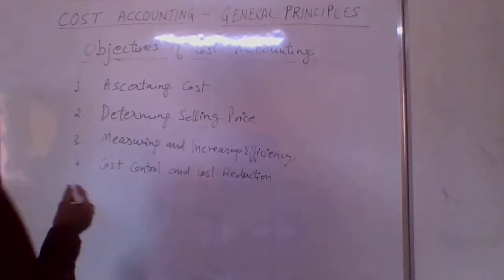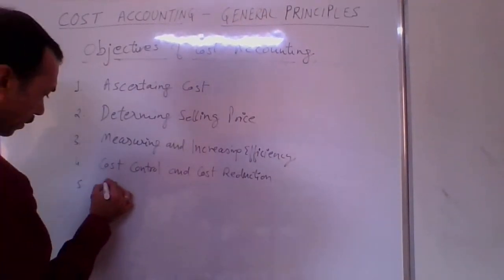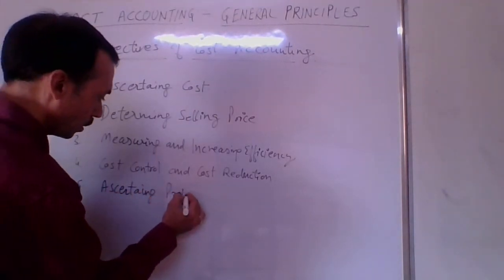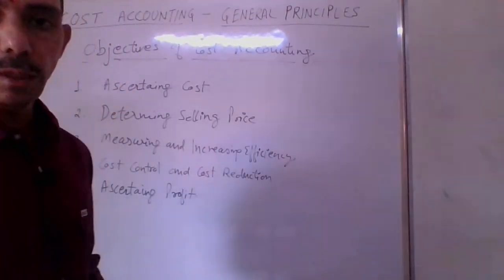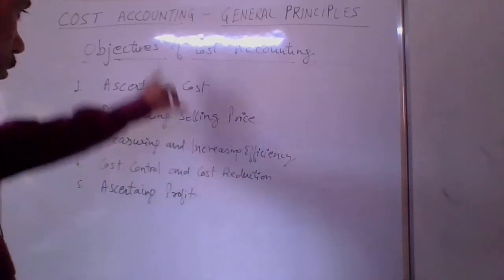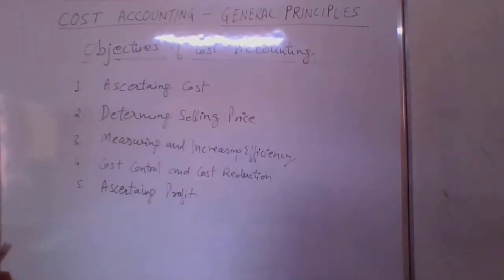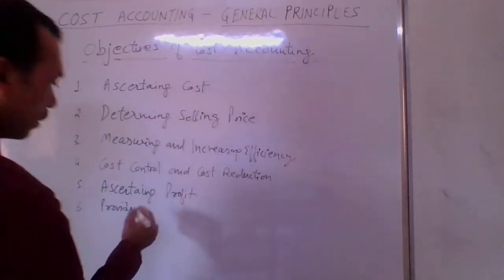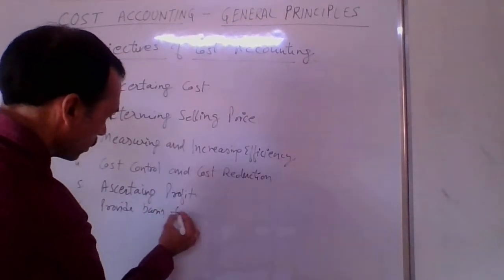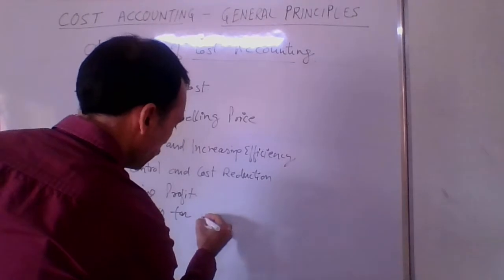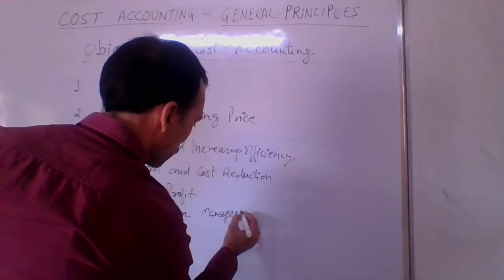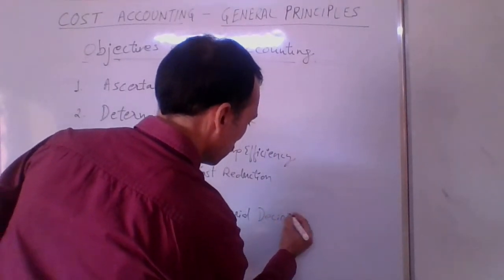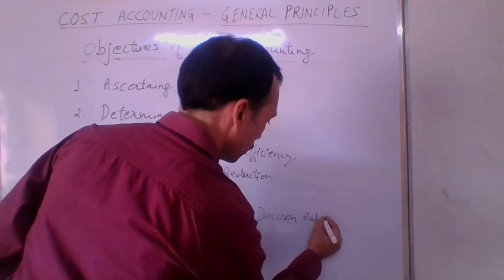The fifth objective is ascertaining profit. For the goods or services we are producing, the profit will be ascertained. That is the fifth objective of cost accounting.